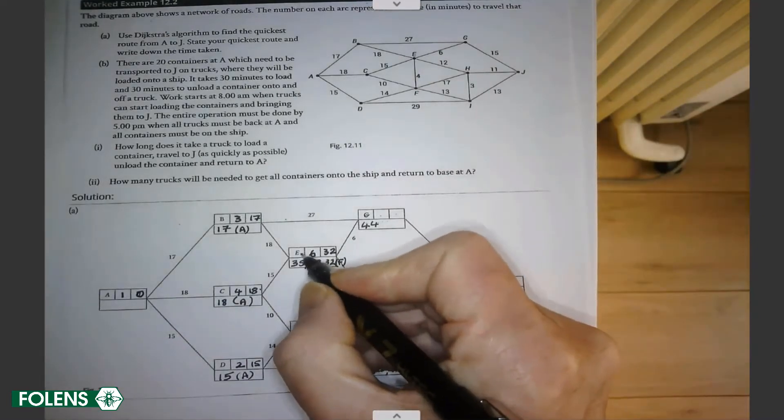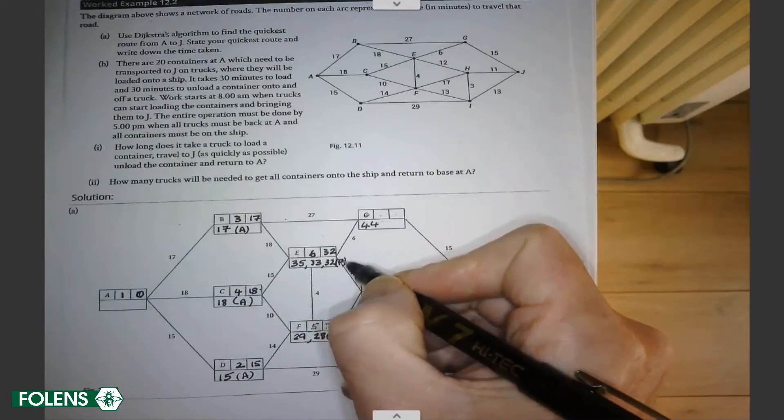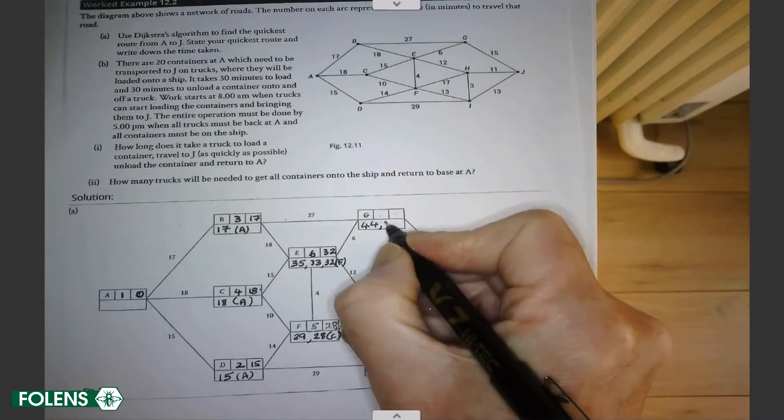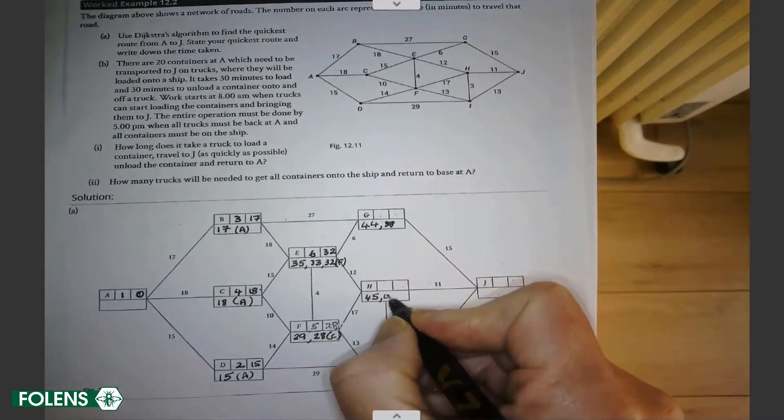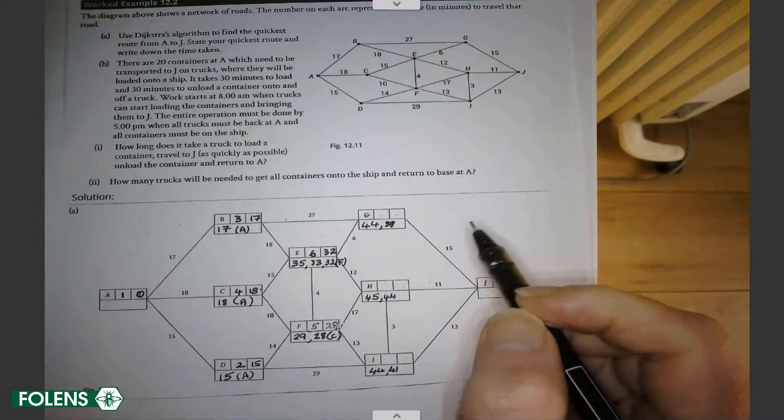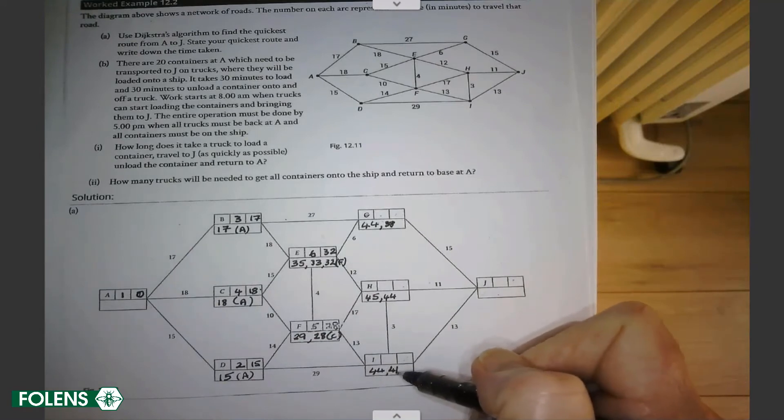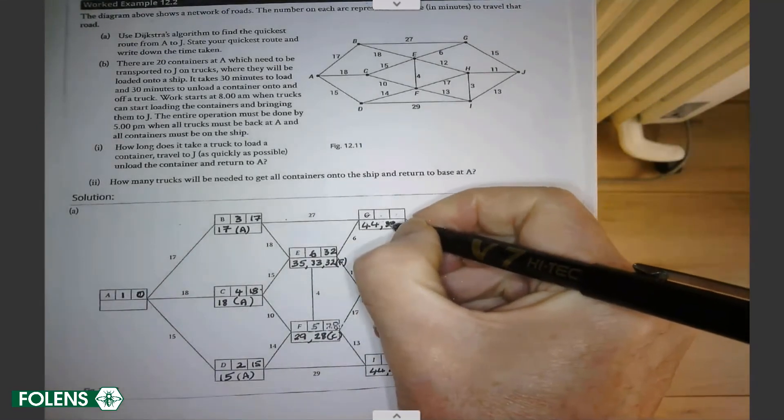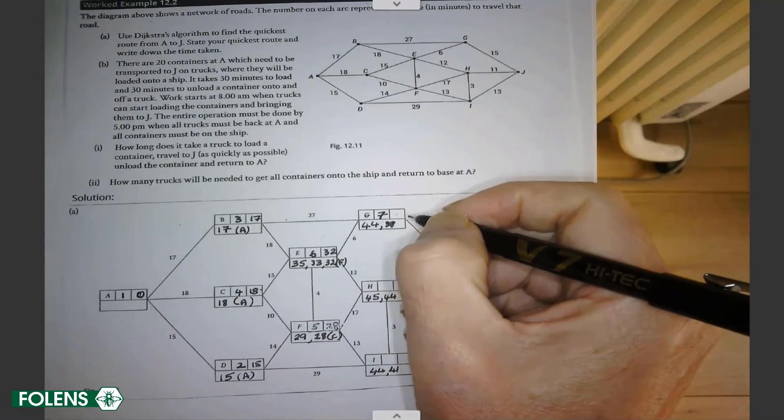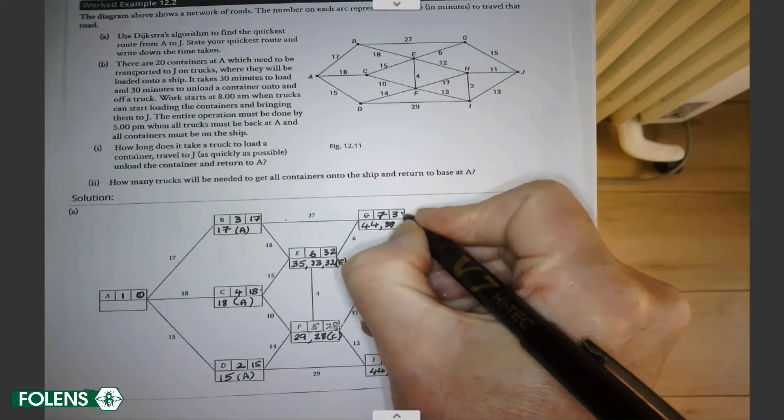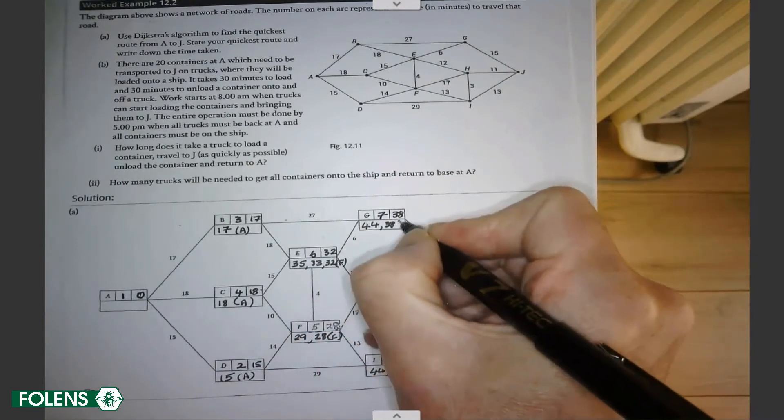Since E is now our latest final value, we look at all the roads that lead onwards from E. 32 and 6 would give you 38. Oh, that's a big improvement. And 32 and 12 would give you 44, which is a small improvement. So we now look at our working values that are not final values. They are 38, 44 and 41. The best of the shortest of those is 38. So G becomes the seventh working, the seventh final value. And its final value is 38. Where did it come from? It came from E. 32 and 6 gave us that. It came from E.